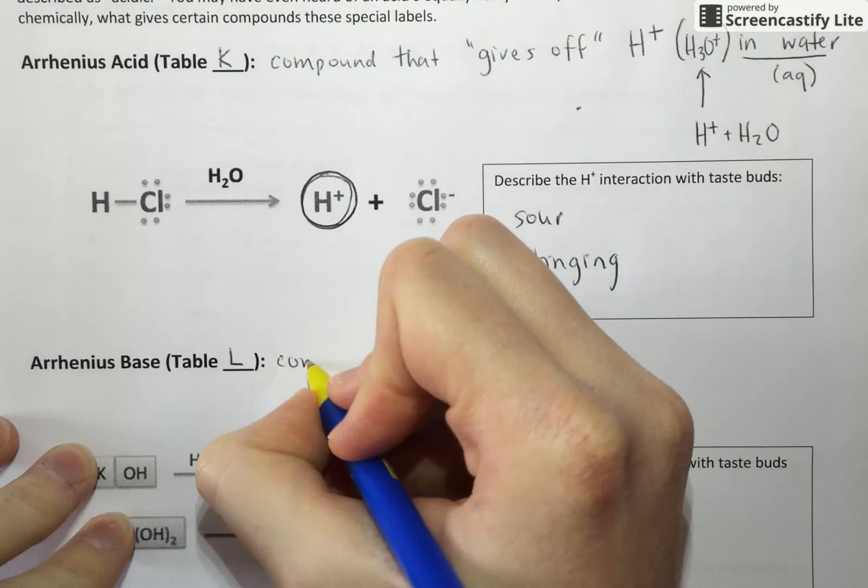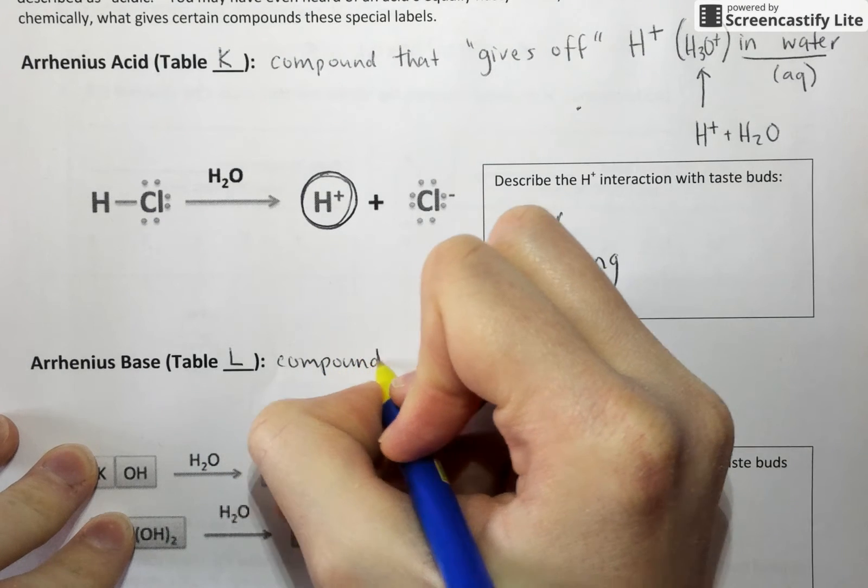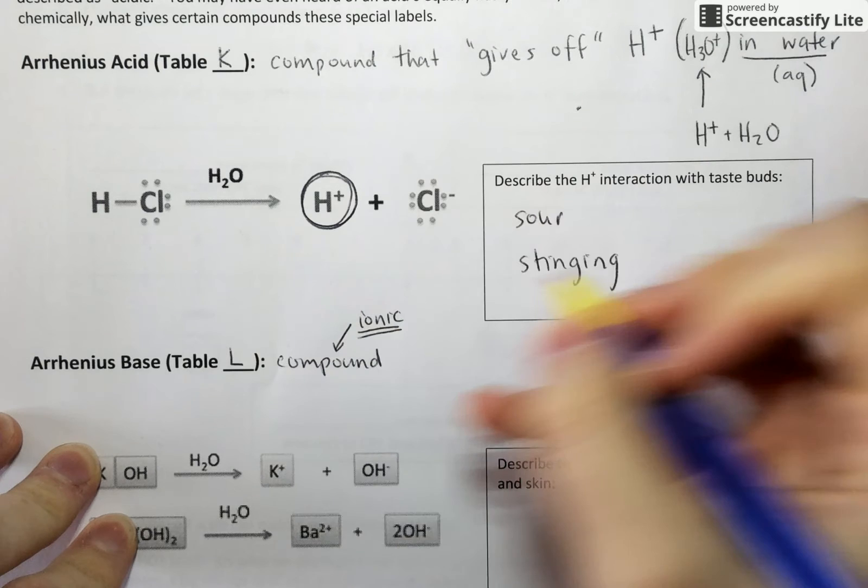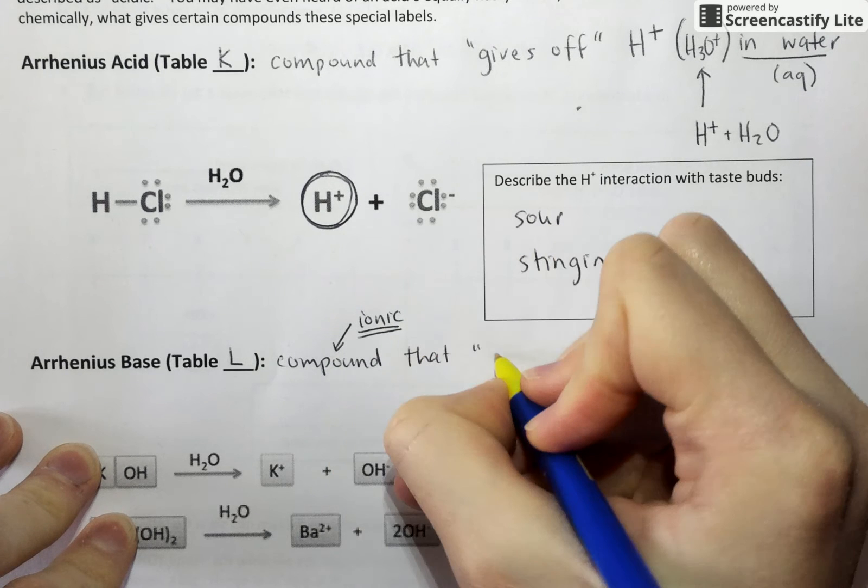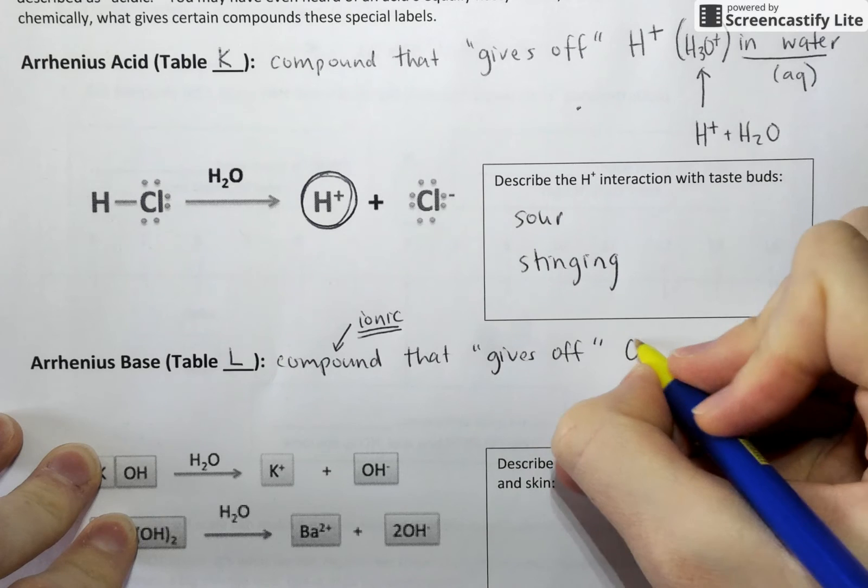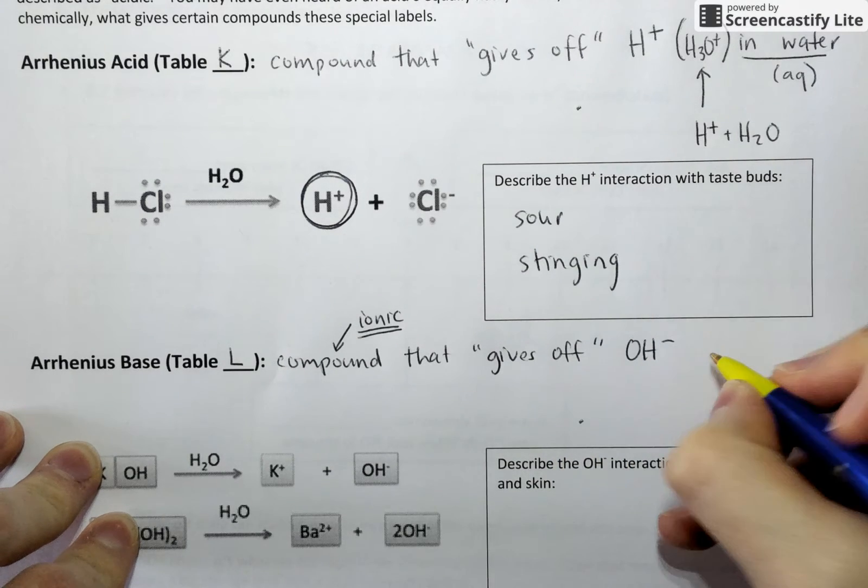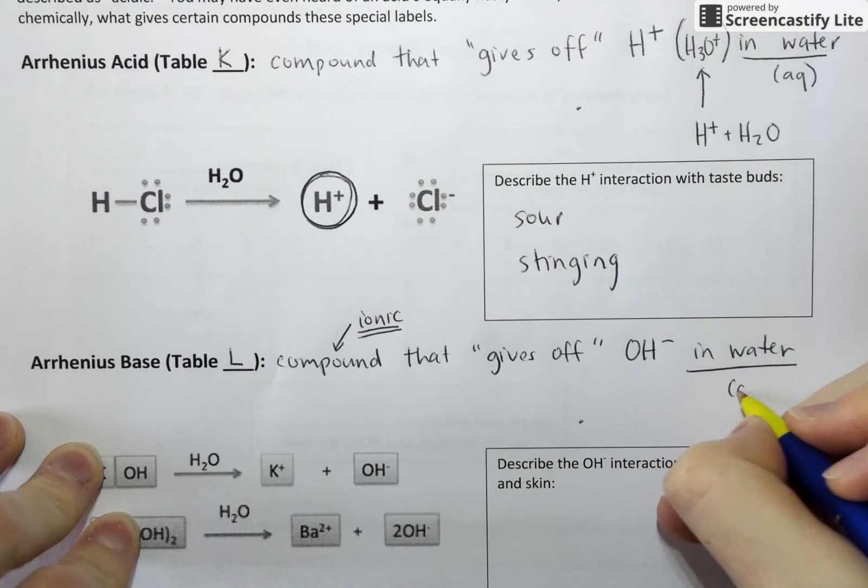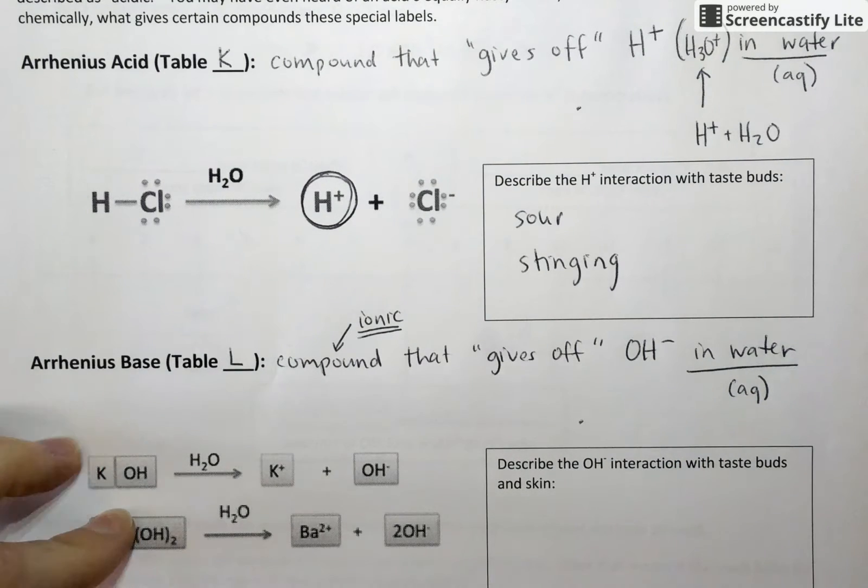So an Arrhenius base, instead of giving off H plus like an acid, is going to be a compound. And these ones are always going to be ionic. That gives off OH minus or hydroxide in water. Again, that in water makes reference to the fact that these are all aqueous solutions.